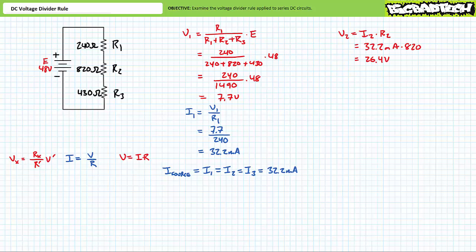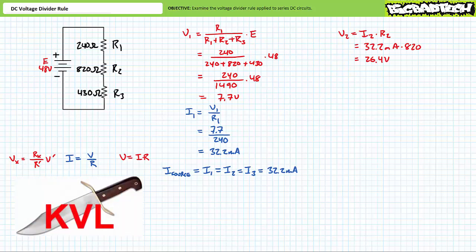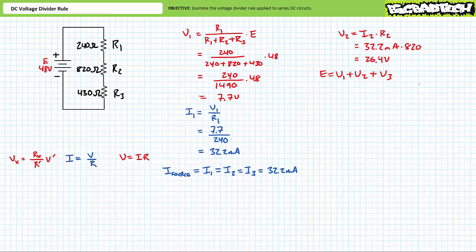We have achieved two of our three goals but we're out of ammo. One more fundamental series circuit property lies within reach — Kirchhoff's voltage law, which states that for any closed loop the sum of voltage rises equals the sum of voltage drops. E equals V1 plus V2 plus V3 — rearranging algebraically demonstrates V3 equals E minus V1 minus V2. Substituting our previously calculated values demonstrates V3 is the remaining 13.9 volts. All three goals accomplished using three different methods: the voltage divider rule, Ohm's law, and Kirchhoff's voltage law.